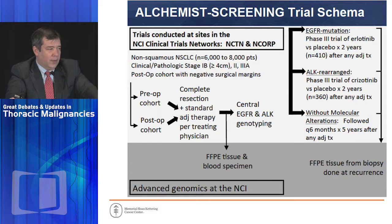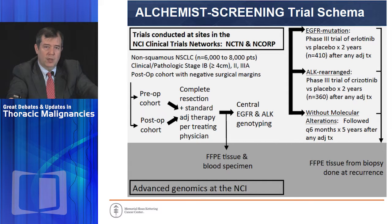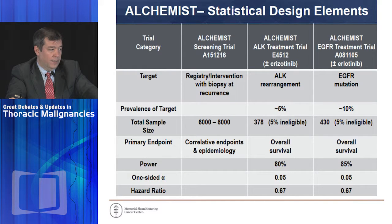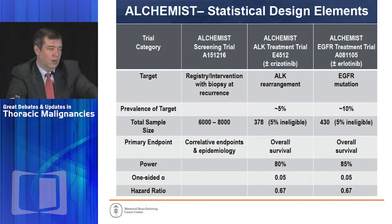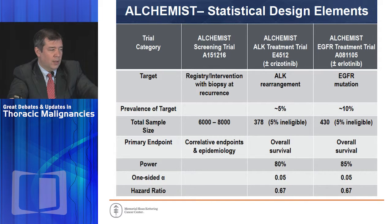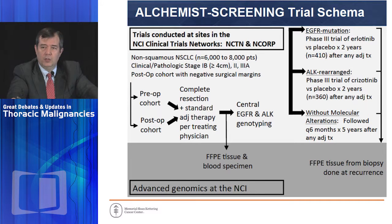The ALCHEMIST trial tests targeted therapies in the adjuvant setting. Patients with non-small cell lung cancer undergo surgical resection and molecular evaluation, then are eligible for trial arms based on their molecular abnormalities. Patients with EGFR mutant lung cancer are randomized to erlotinib or placebo; patients with ALK-positive lung cancer are randomized to crizotinib or placebo. The primary endpoint is overall survival, looking for a hazard ratio of 0.67. A challenge is that EGFR and ALK together account for only about a quarter of patients, so three quarters won't have an arm.